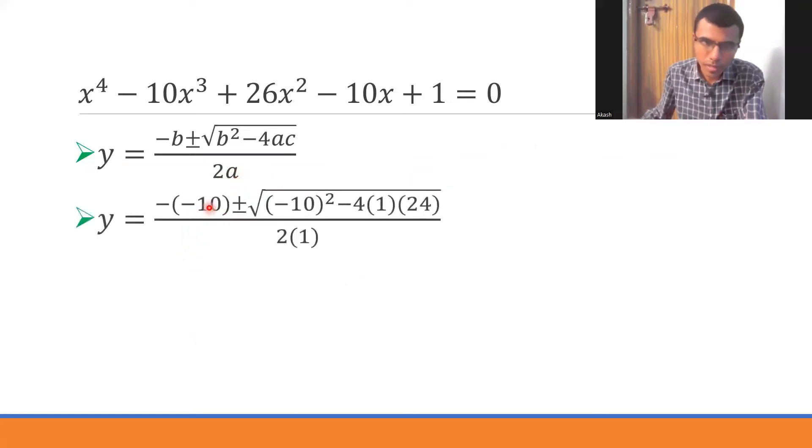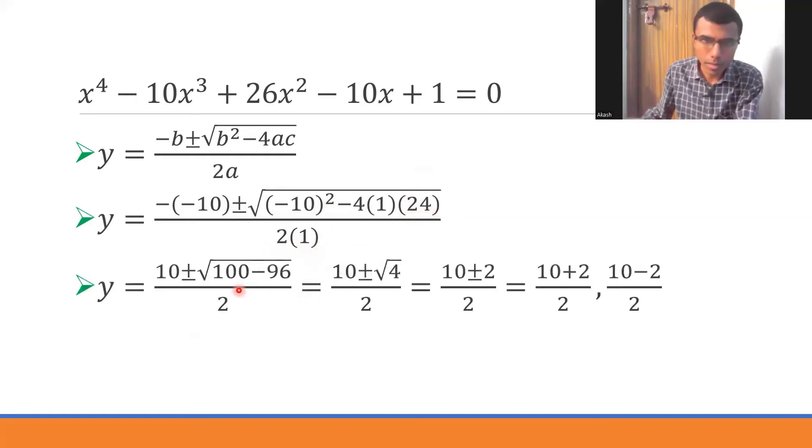I am going to substitute the values and you would get something like this. -(-10) would be +10. (-10)² would be 100 and 4·24 is 96. Two ones are 2. This is what I am left out with.